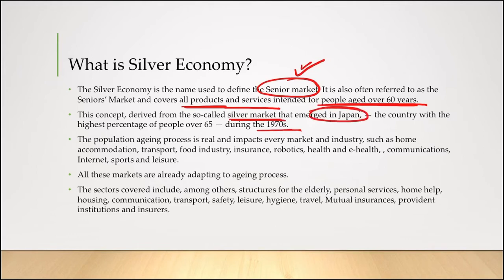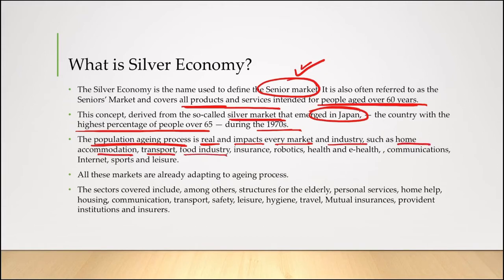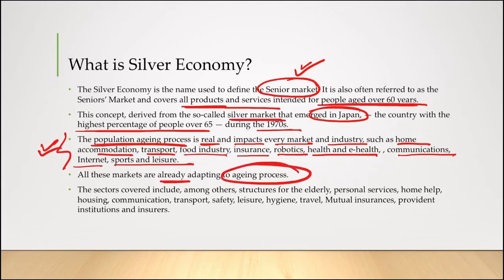Japan is a country which has the highest percentage of population aged over 65 years. This population aging process is real and it has impacted every market and industry, such as home accommodation, transport, food industry, insurance, robotics, health and e-health, communications, internet, and sports and leisure. All these markets are already adapting to this aging process, and that is why the government wants to promote silver economy in these sectors.